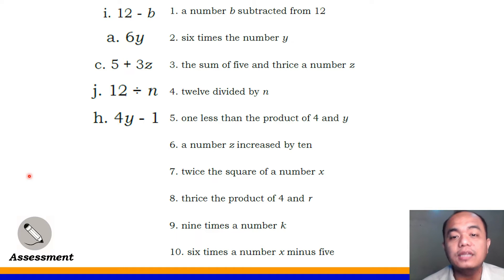Number 6, a number Z increased by 10. Yes, it's letter F, Z plus 10. Number 7, twice the square of a number X. Yes, it's letter B, that's 2X squared. Number 8, thrice the product of 4 and R. Yes, it's letter G, 3 times 4R. Next, number 9, nine times a number K. Okay, very good, letter E, 9K or 9 times K. Number 10, six times a number X minus 5. Very good, it's letter D, 6X minus 5. I hope you've got a very good score on your assessment for lesson 1 of this module. Good job!